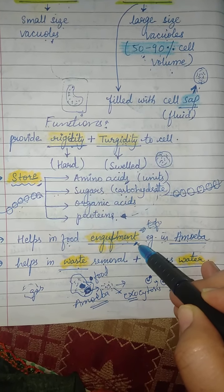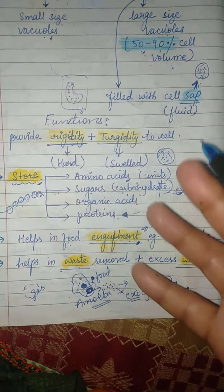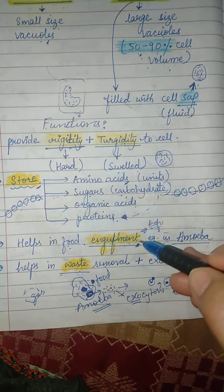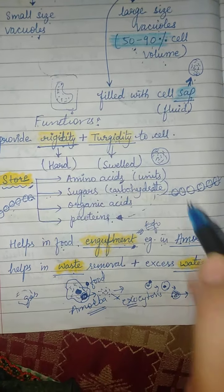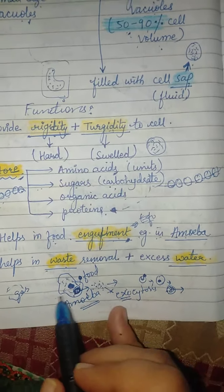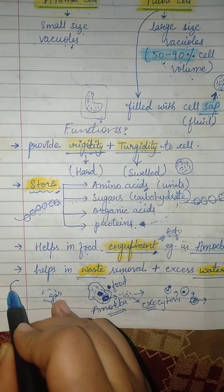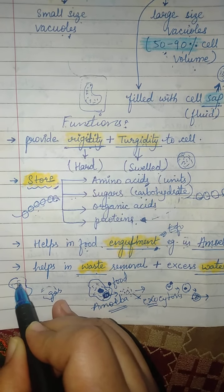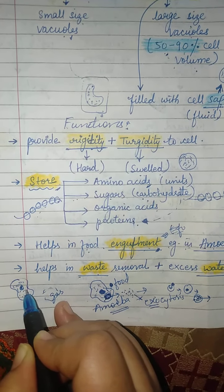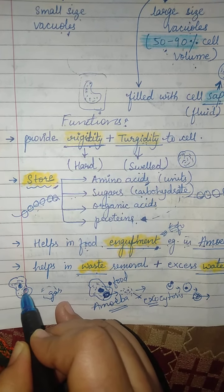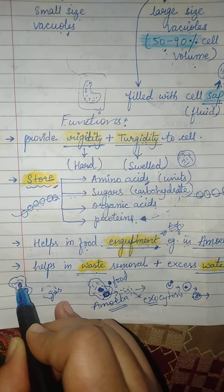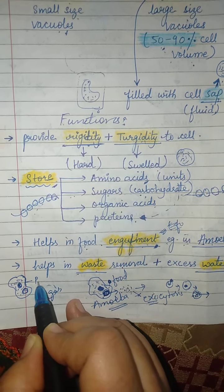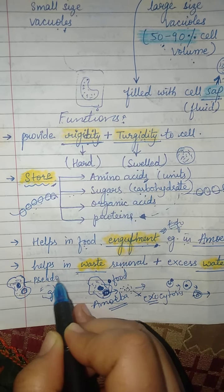Another function of vacuoles is engulfment — meaning the eating or intake of food. Consider the amoeba, a unicellular organism. It has a food vacuole, a nucleus, and false feet called pseudopodia, which it uses to engulf food.